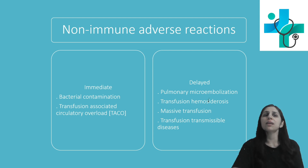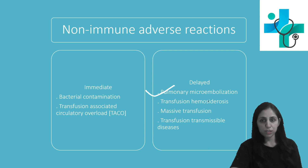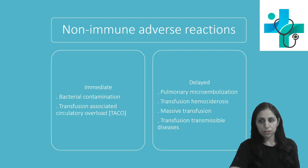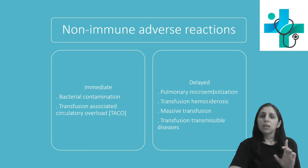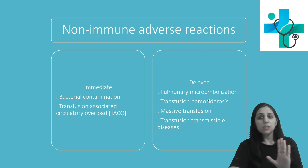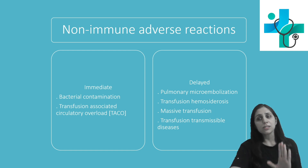Now let us discuss delayed non-immune adverse reactions. The first common one is pulmonary microembolization or air embolism, which is rarely seen nowadays because blood transfusion is done with plastic bags under negative pressure. If it does develop, approximately 10 to 40 ml of air in circulation is needed to produce symptoms.